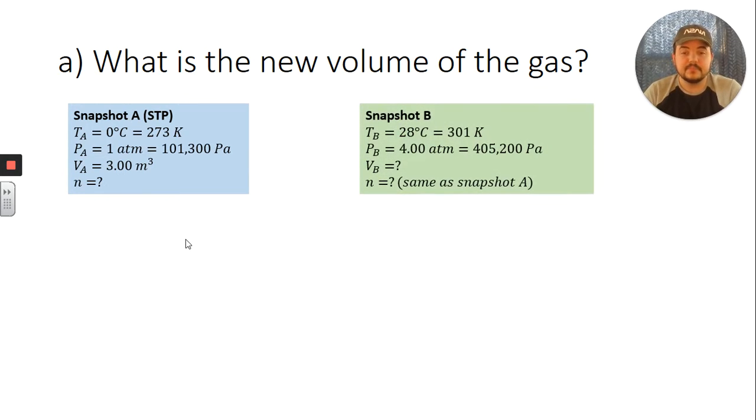Snapshot b is at 28 degrees Celsius or 301 Kelvin. The pressure is four atmospheres or 405,200 pascals. We don't know the new volume of the gas, that's what we're trying to figure out in part a of this problem. And again, we don't know the number of moles, but we do know that it's going to be the same as what it was in snapshot a because there is no intake of new gas into the cylinder or exhaust of gas out of the cylinder. So two unknowns here, that's not going to be a good starting point. Snapshot a, one unknown, we can use the ideal gas law to find that one unknown.